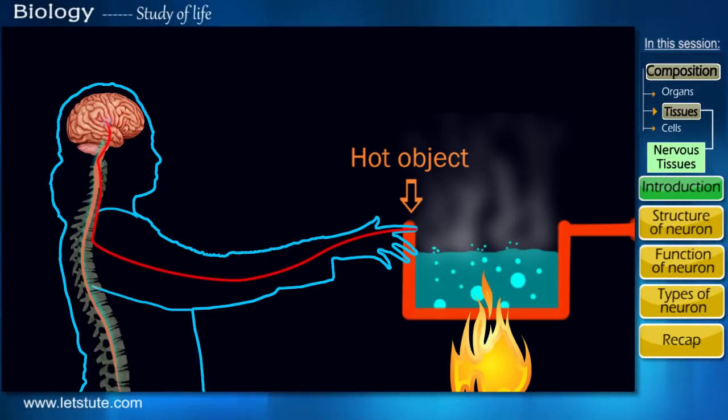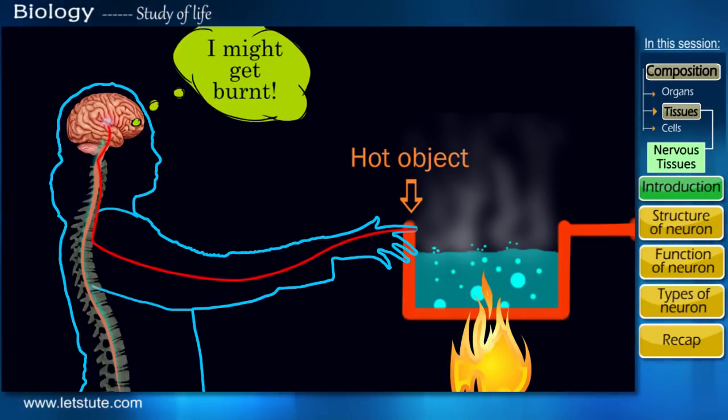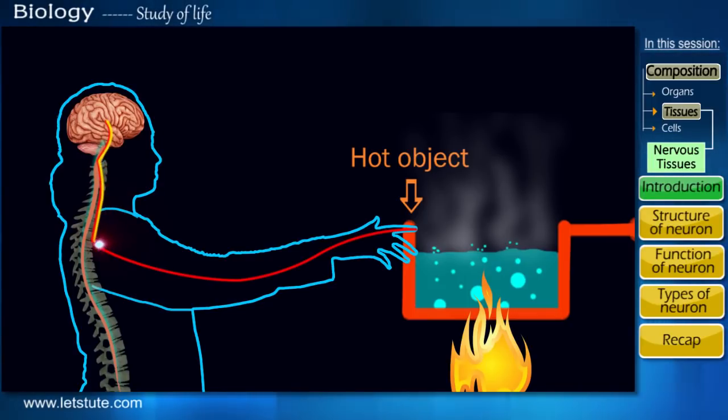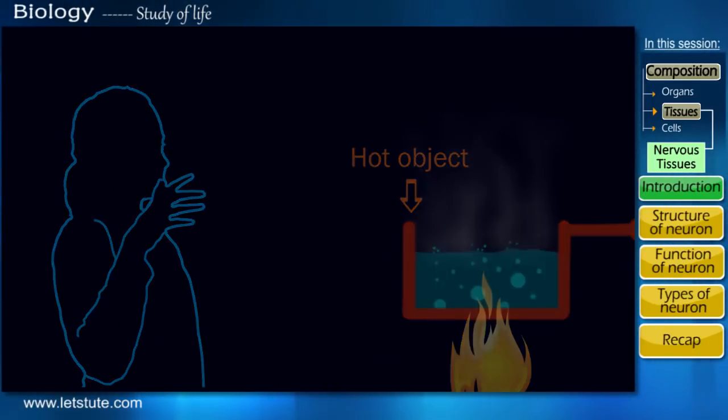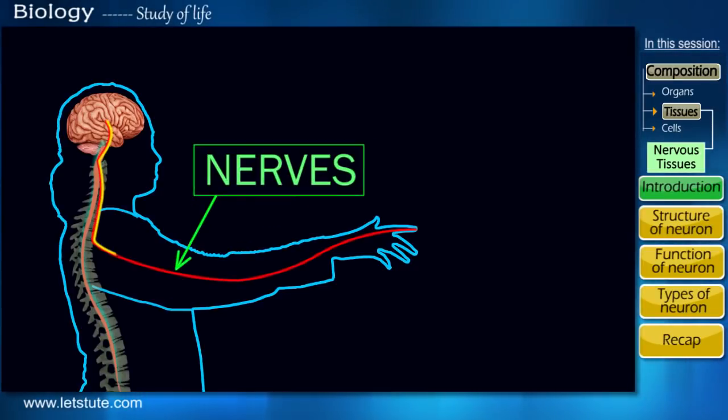This message is understood by the brain that it's not good to touch this hot object for long as it may burn us. So then, a counter message is sent by the brain to the hand via these connections, as a result of which, we pull back our hand. These connections in our body are called nerves.